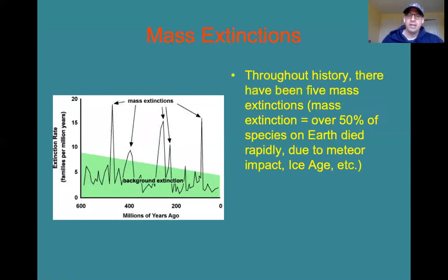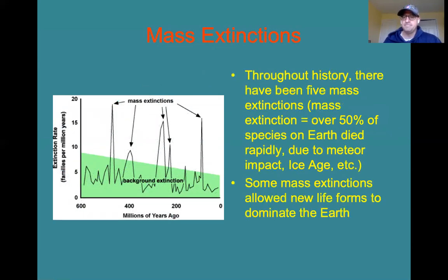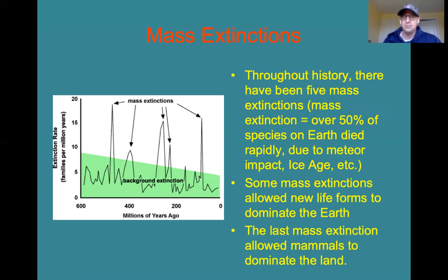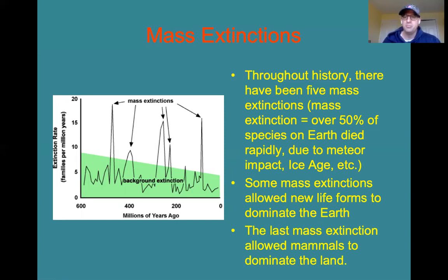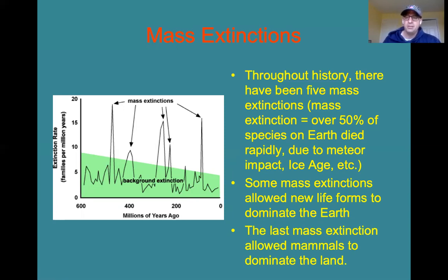You did watch the video on mass extinctions — you did that on Tuesday, on the day the Mesozoic died. Throughout history there have been five major mass extinctions. We are probably in the middle of a sixth mass extinction right now, driven by humans and human impact on the environment. A mass extinction is defined as over 50% of all the species on earth dying rapidly — and we're talking thousands, tens of thousands of years when we say rapidly, because we're talking geologically, not rapid for you and me.